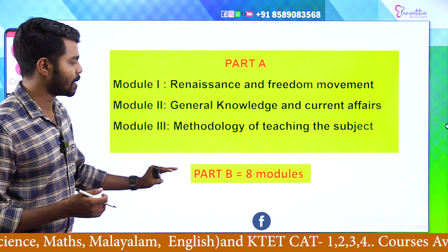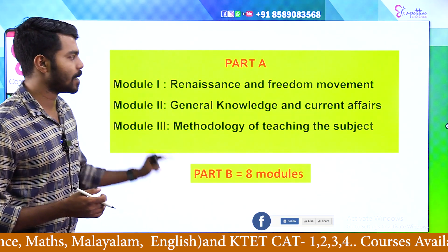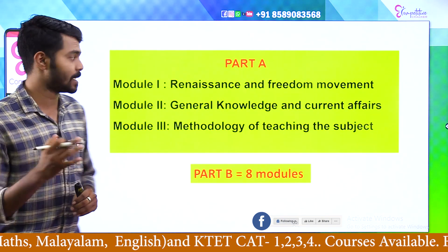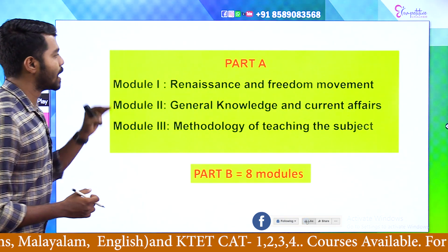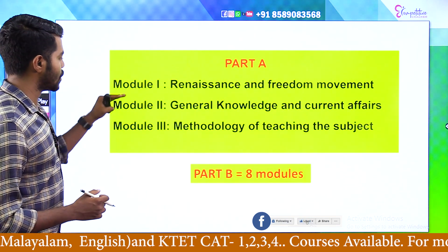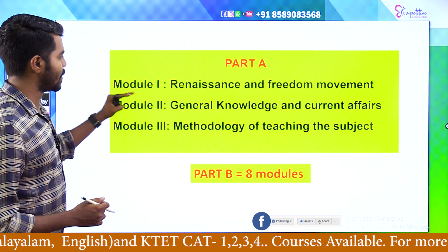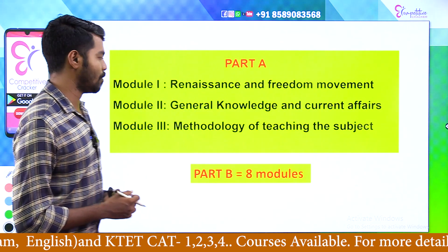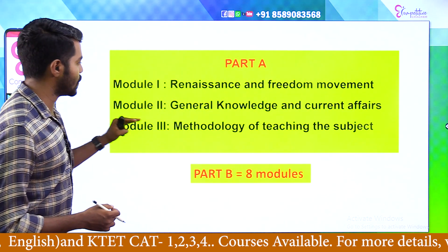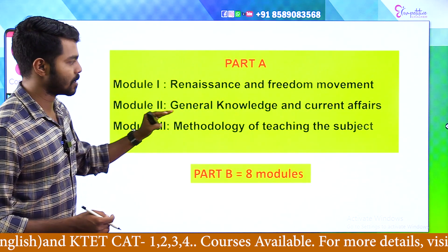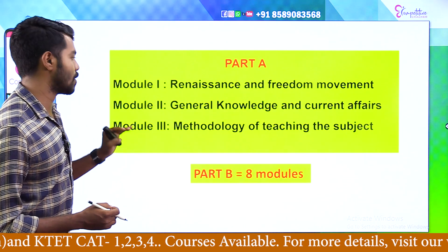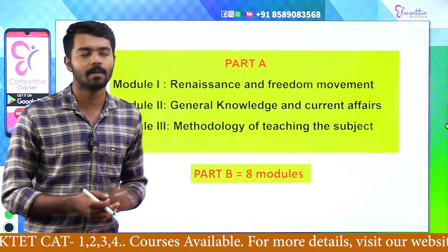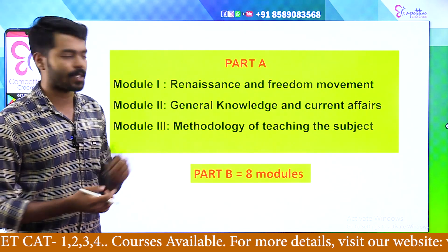In part A and part B, there are two parts of the syllabus. In part A, there are three modules: Module 1 — Renaissance and Freedom Movement; Module 2 — General Knowledge and Current Affairs; Module 3 — Methodology of Teaching the Subjects.